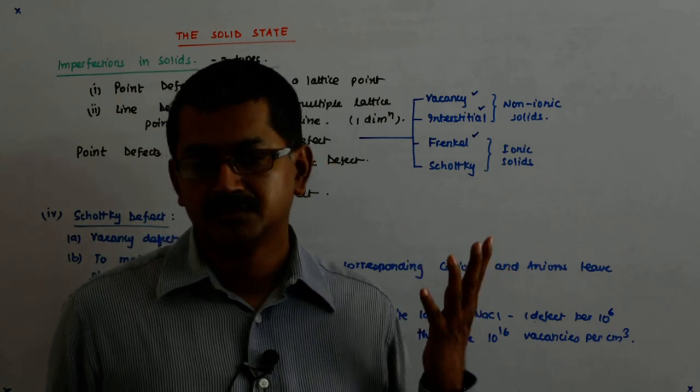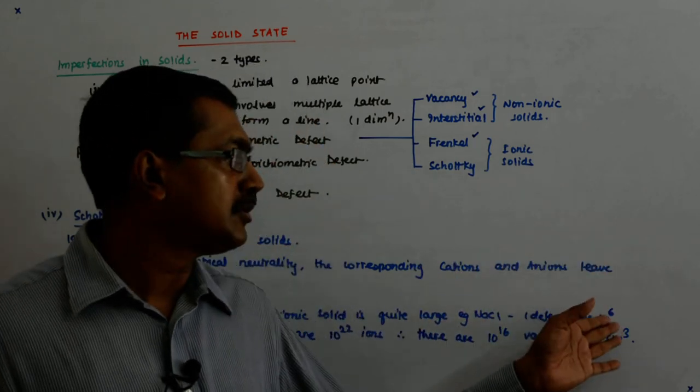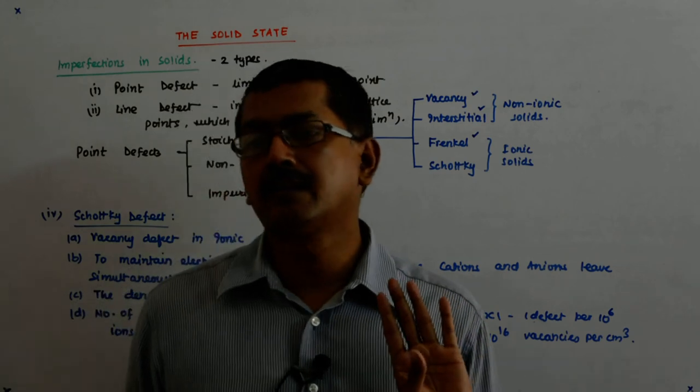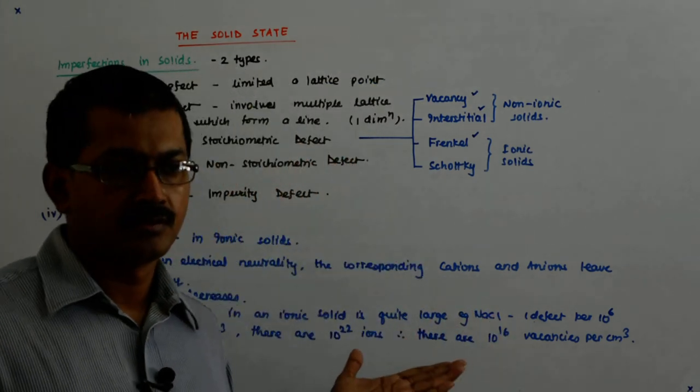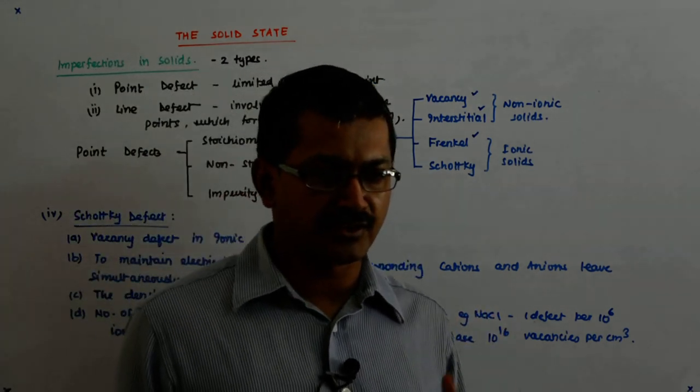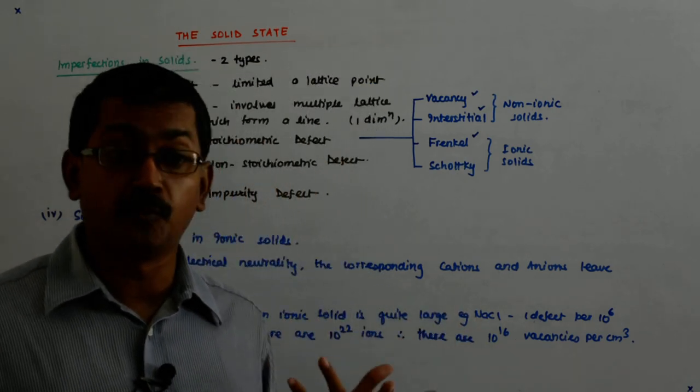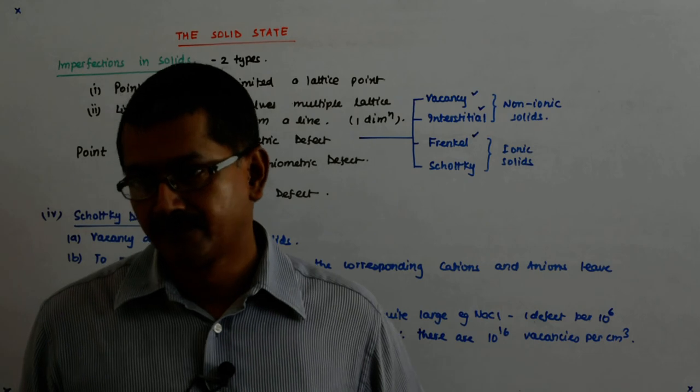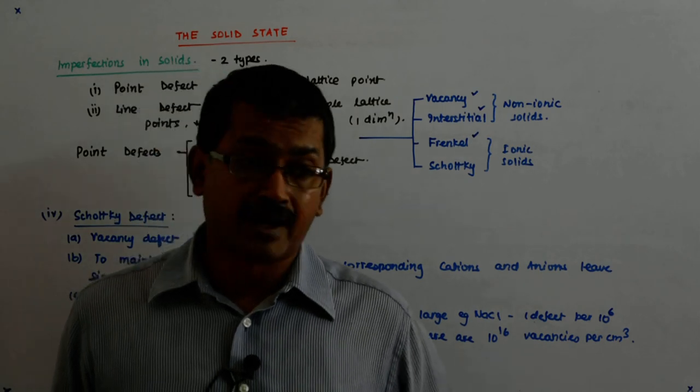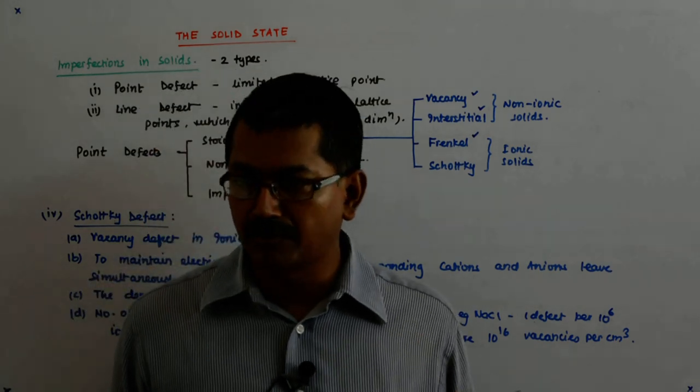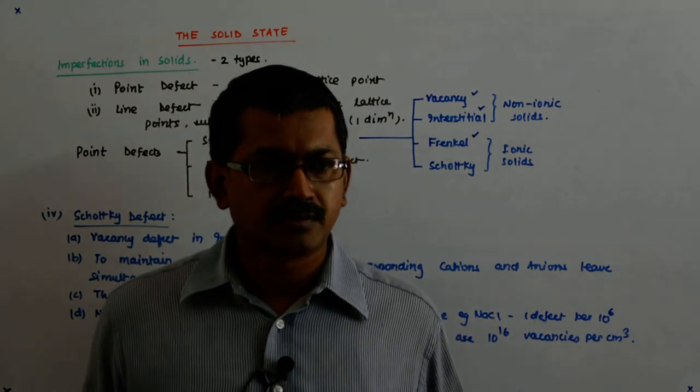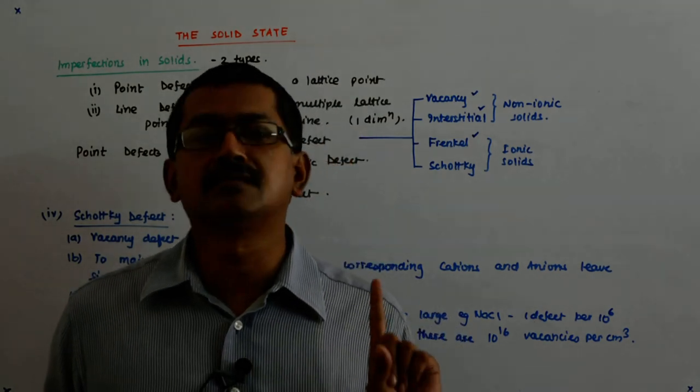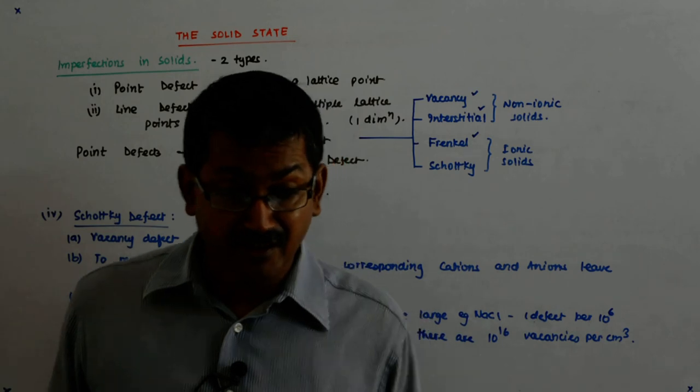That is a huge number. But compared to the number of atoms that are there, that is how much? It is 1 upon 10 to the power 6 into 100. So 1 upon 10 to the power 4 percent. It is 0.0001 percent. But look at the sheer numbers. The absolute numbers are huge. 10,000 trillion defects in one centimeter cube is kind of something.